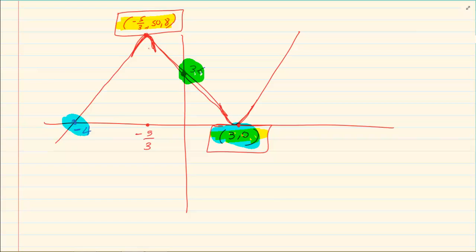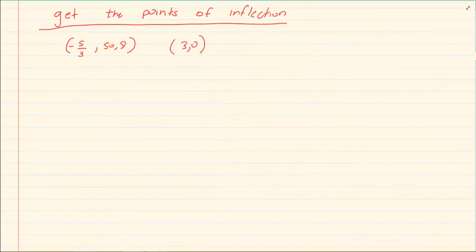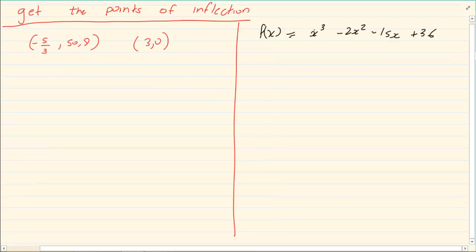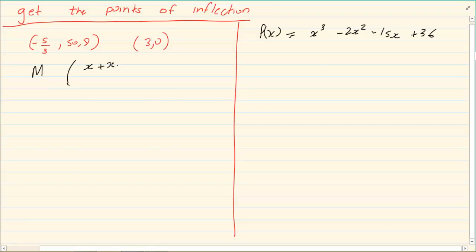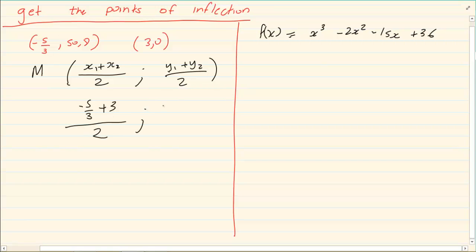We have turning points at minus 5 over 3 and 50.8, and at 3 and 0, from the equation x cubed minus 2x squared minus 15x plus 36. There are two ways to do it. Number one, you can do it the midpoint way from analytical geometry: x1 plus x2 over 2 and y1 plus y2 over 2. In this case, minus 5 over 3 plus 3 divided by 2 gives 2 over 3, and 50.8 plus 0 divided by 2 gives 25.4.